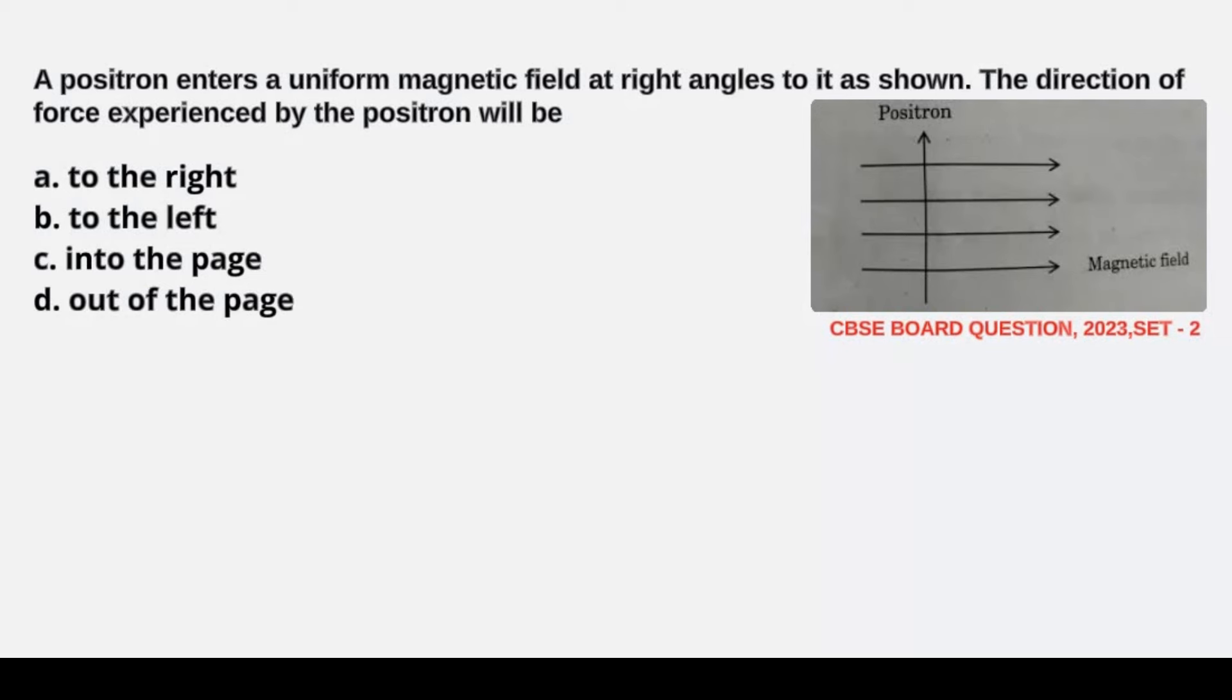A positron enters a uniform magnetic field at right angles to it as shown. The direction of force experienced by the positron will be to the right, to the left, into the page, or out of the page. So here we have a positron entering a magnetic field at right angles.